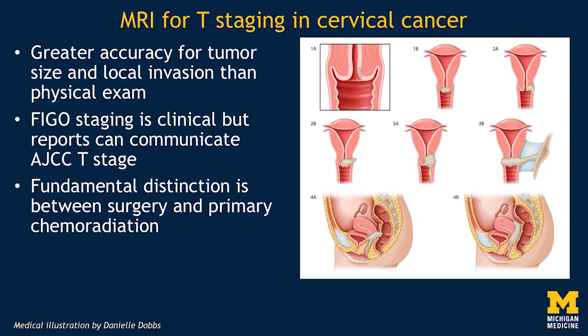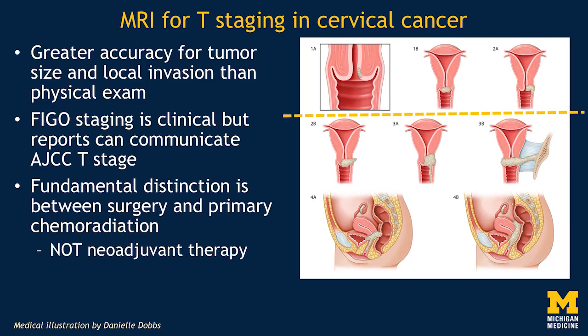FIGO staging is clinical, but reports can communicate the AJCC T-stage. I would not presume on an MRI to say what the FIGO stage was, but I will often say that an AJCC T-stage would be such and such in order to communicate what I think. The fundamental distinction is between surgery and primary chemoradiation. Women with small tumors may be treated with conization, trachelectomy, or radical hysterectomy. Women who have parametrial or more extensive local tumor involvement will be treated with primary chemoradiation — this is not neoadjuvant therapy. Unlike rectal cancer, where the intention is to shrink the tumor and then operate, in cervical cancer the intention is to do the complete treatment with chemo and radiation. Imaging is very helpful in establishing where this threshold is.